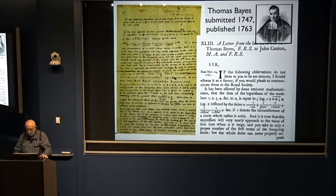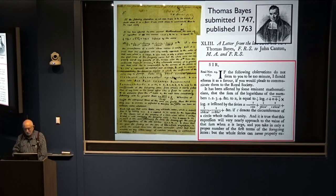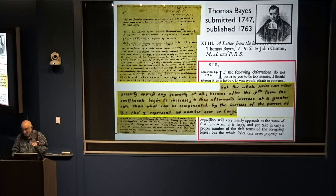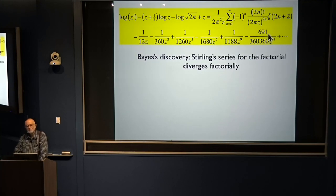He said — we don't know why there was a delay — 'If the following observations do not seem to you to be too minute, I would esteem it as a favour if you would please communicate them to the Royal Society.' What he discovered was that a series commonly used in mathematics is divergent, and he was very puzzled by this. He wrote: 'The whole series can never properly express any quantity at all, because after the fifth term the coefficients begin to increase, and they afterwards increase at a greater rate than what can be compensated by the increase of the powers of z, though z represent a number ever so large.' So what he discovered was that Stirling's formula for the gamma function — the logarithm of it — is divergent. And he discovered that it's factorially divergent.